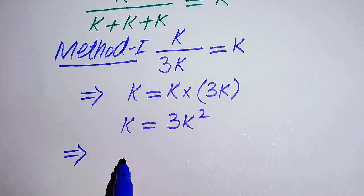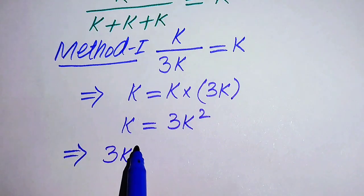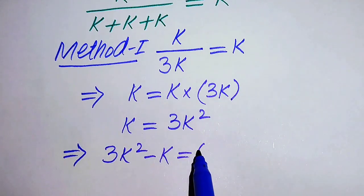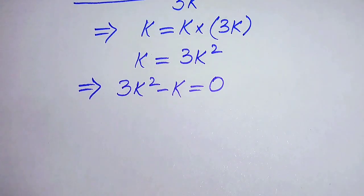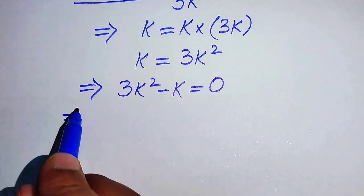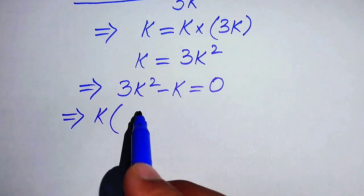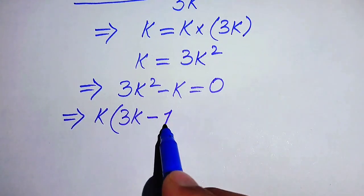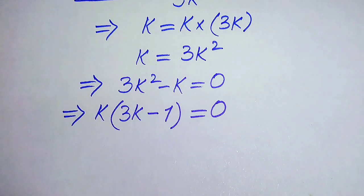Since we want to find the values of k, we move k from the left-hand side to the right-hand side — it becomes negative — so the equation equals zero. Both terms involve k, so we factor out k and get k times (3k minus 1) equals zero.